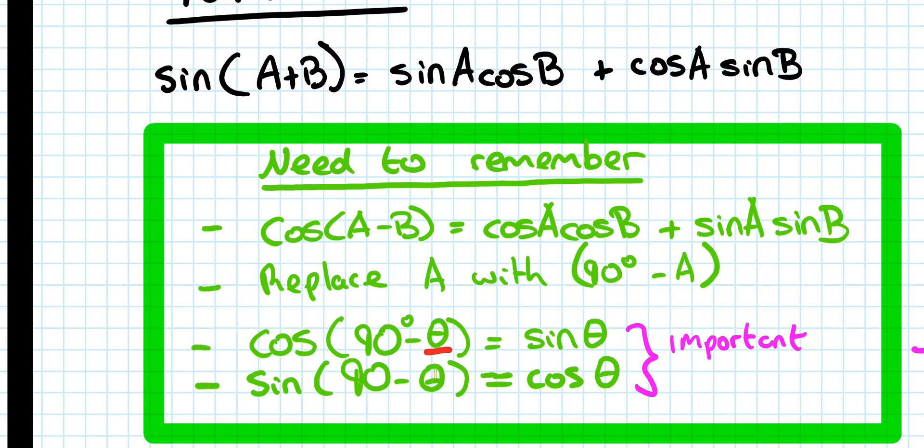And then you need to remember that cos of 90 minus theta is equal to sin theta, and sin of 90 minus theta is equal to cos theta, and that's really important, but I'll explain that a little bit now.